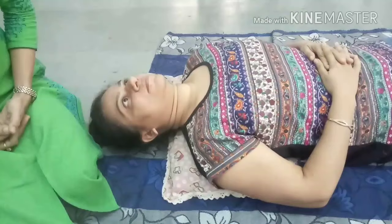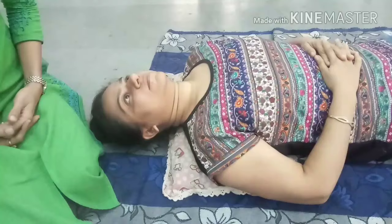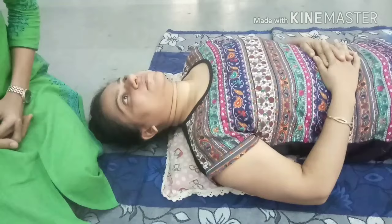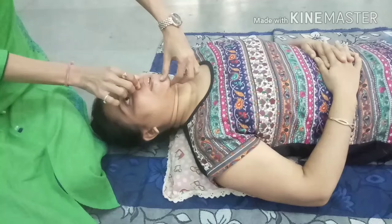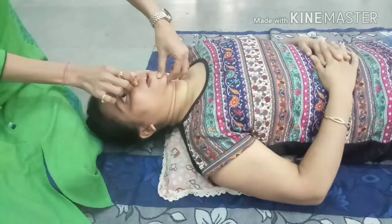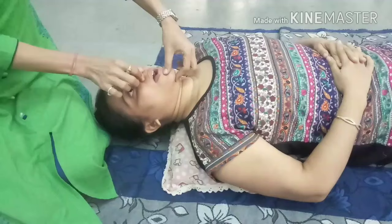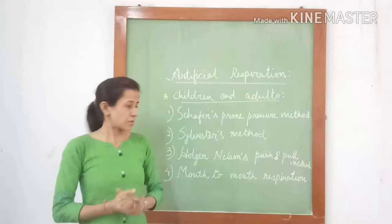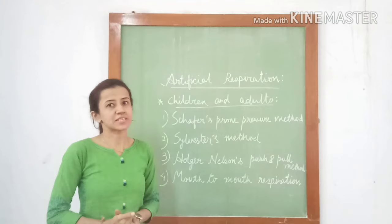Next is mouth to mouth respiration. Extend the patient's head by placing a pillow under the scapula. Clean the mouth and keep a thin cloth over the lips. Pinch the nostrils with one hand and grasp the lower jaw with the other hand between the thumb and index finger. Lift the jaw and keep the mouth open. Take a deep breath and blow air into the patient's mouth until the chest expands. Repeat the cycle at the indicated rate. Mouth to mouth respiration is the best method of artificial respiration.